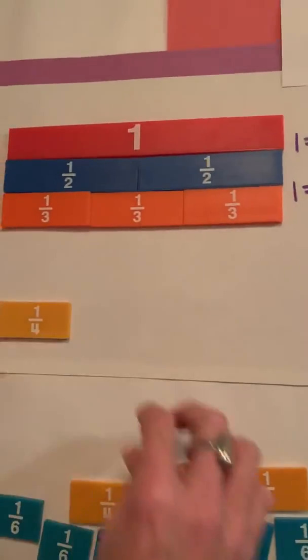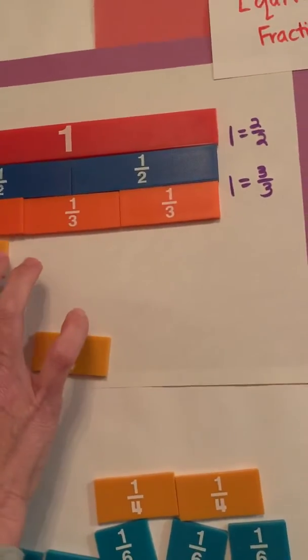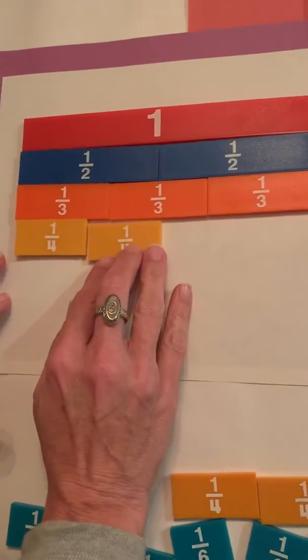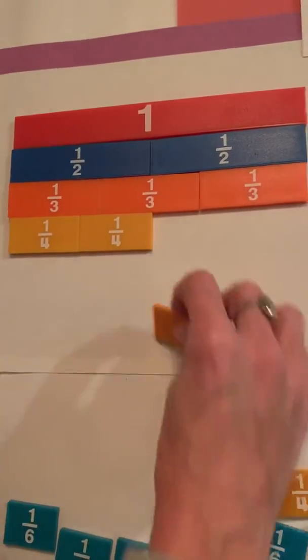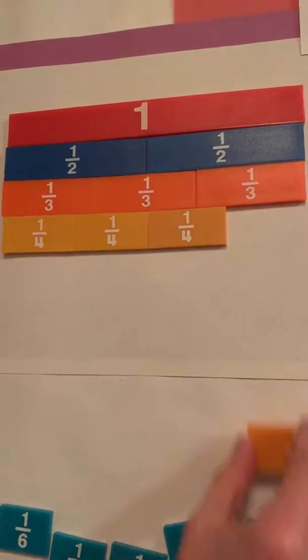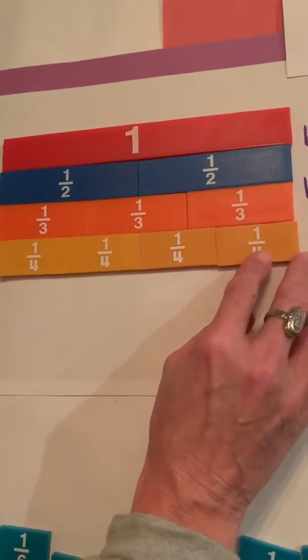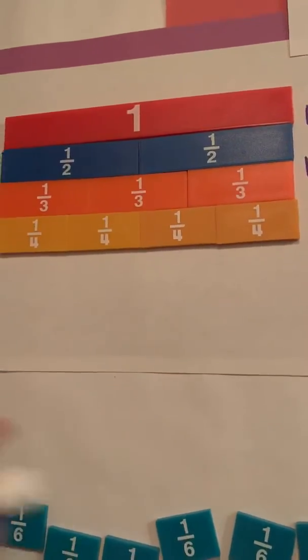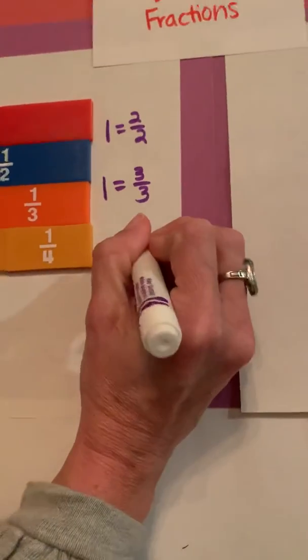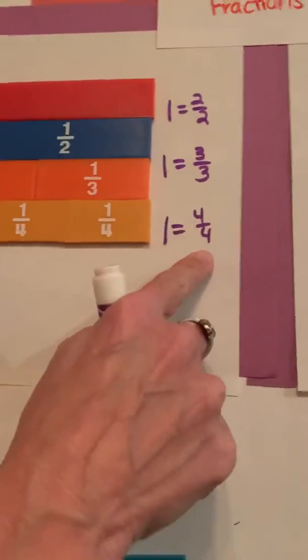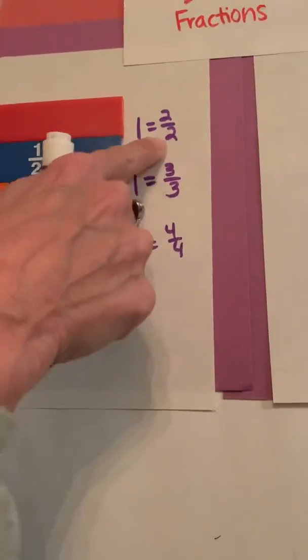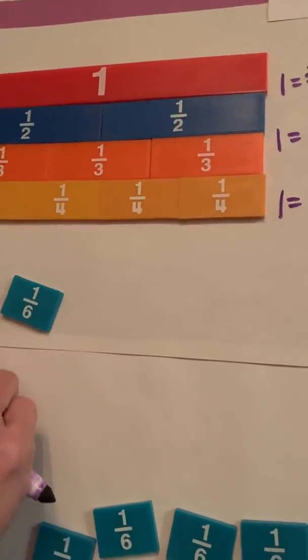So now let's look at our fourths. I'm going to line them up. Don't want to leave any gaps. And we can see that also one whole is equal to four fourths. Not only is one whole equal to four fourths, four fourths is also equal to three thirds and two halves.